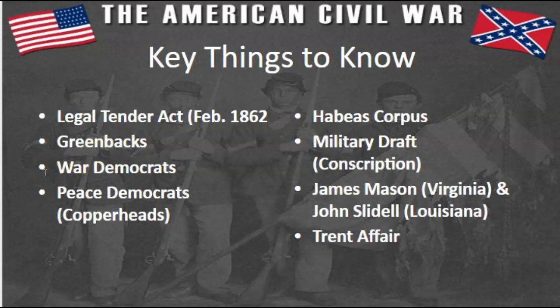War Democrats were people who supported the war and wanted to restore the Union. They opposed ending slavery. Remember, Lincoln's goal was to preserve the Union even if it meant allowing slavery to continue. At the beginning of the Civil War, many northern Democrats and Republicans challenged Lincoln's view on this — we did that activity in class with the candidates in the election of 1860. So war Democrats supported the war for restoring the Union but opposed ending slavery.